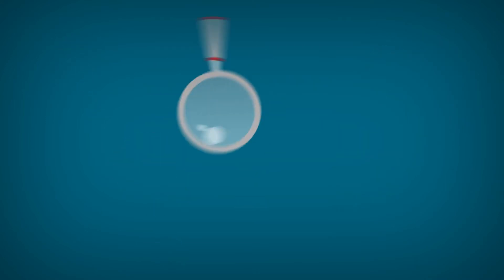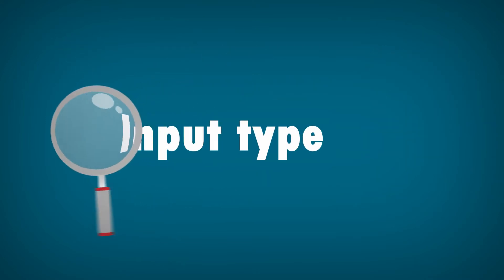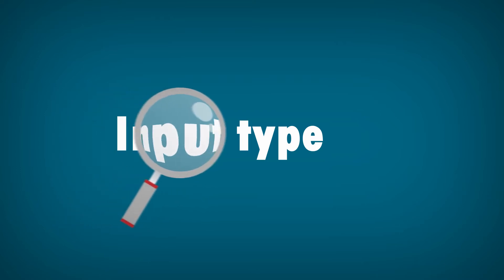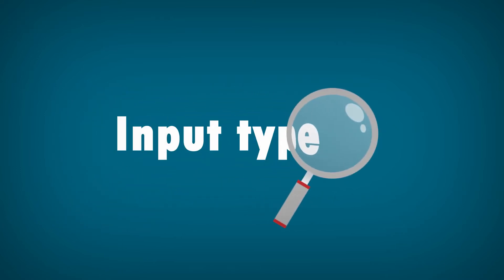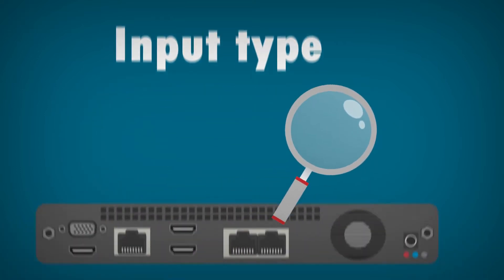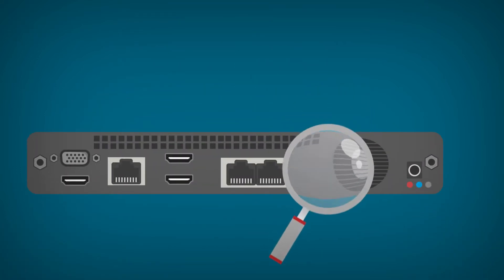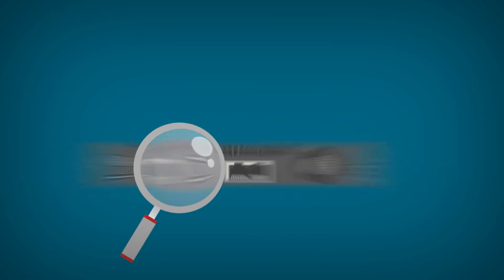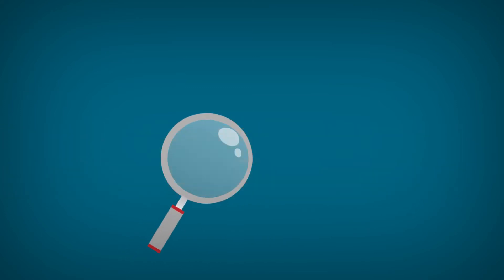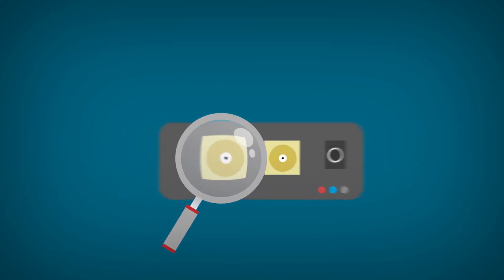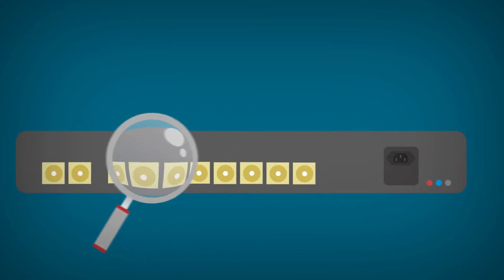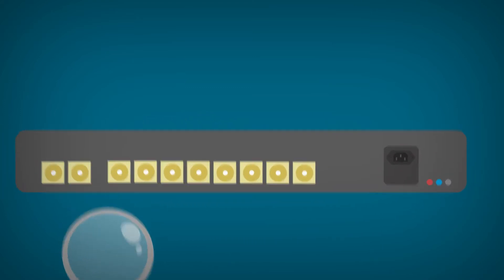What criteria should you consider when selecting a distribution amplifier? First, check what kind of input you need to transmit. Input signal formats vary and can include multiple types, such as HDMI, DVI, HD-SDI, and 3G HD-SDI.